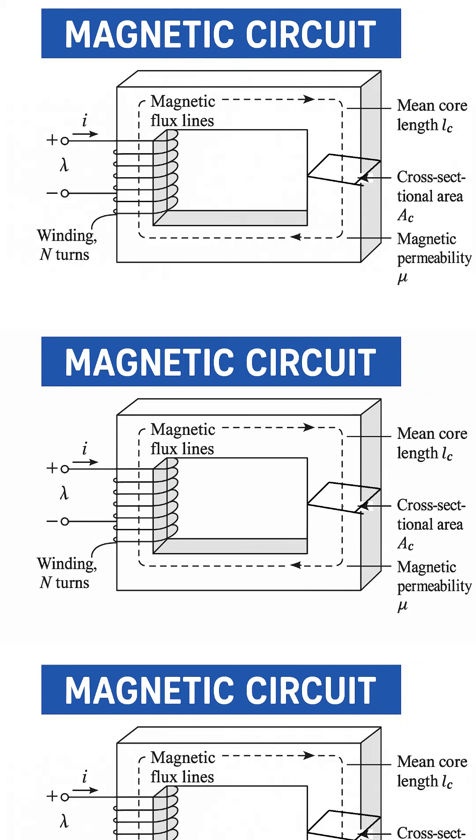The number of turns in the coil is shown as N, and the total magnetic effect, or flux linkage, is represented by the Greek letter lambda.